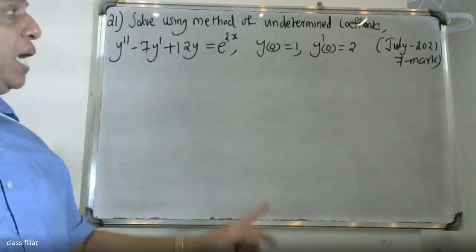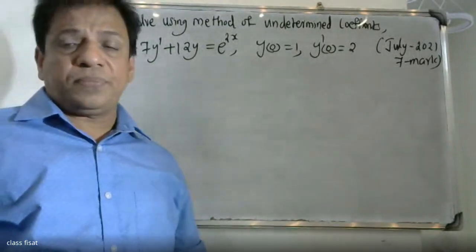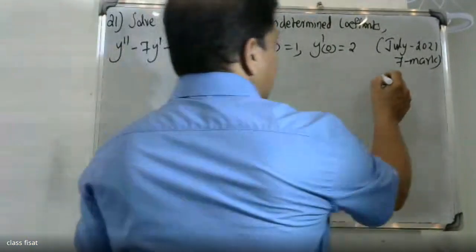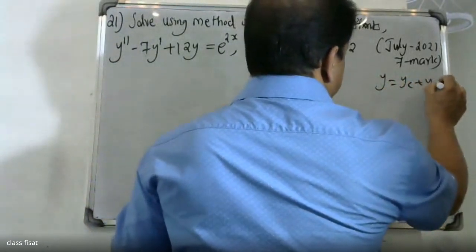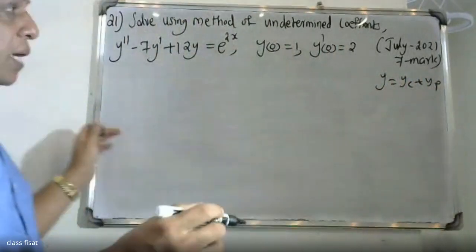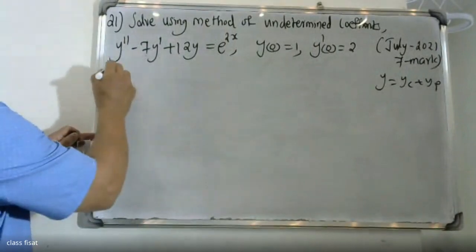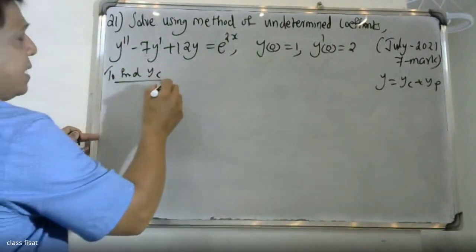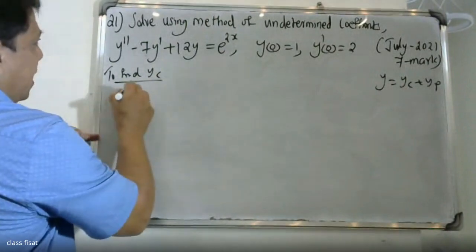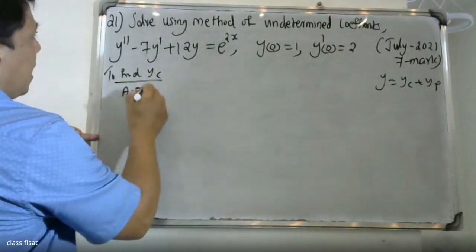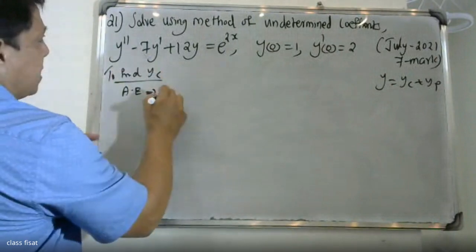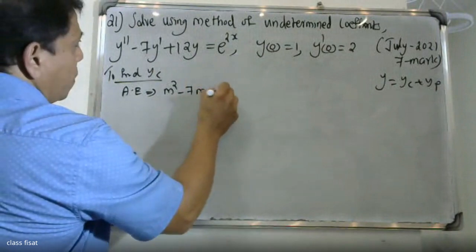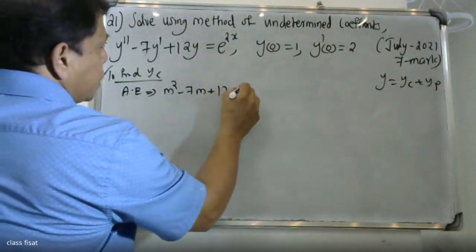We have to find the solution. The total solution is y equals yc plus yp. Setting up the characteristic equation: m squared minus 7m plus 12 equals 0.